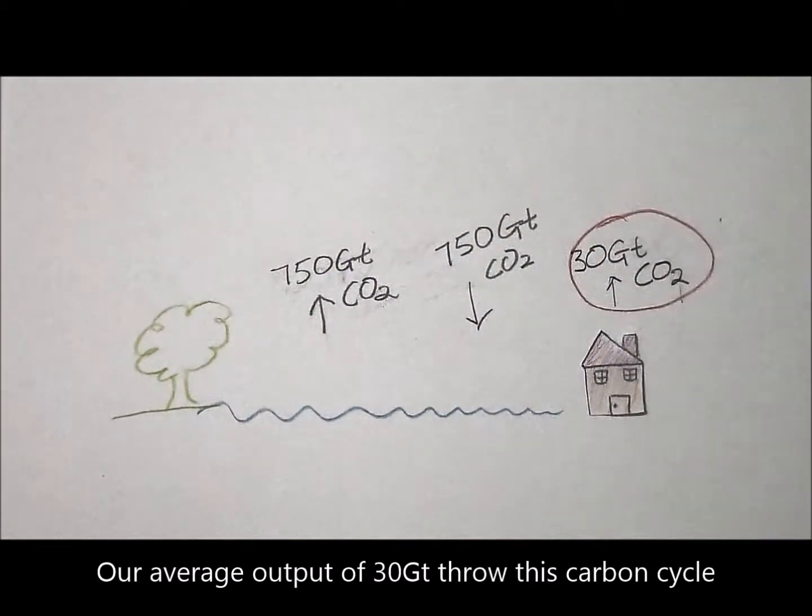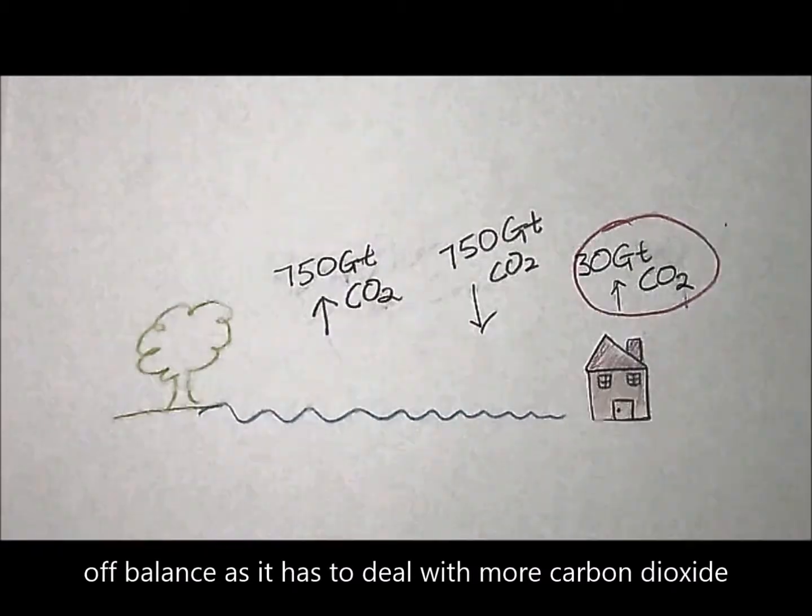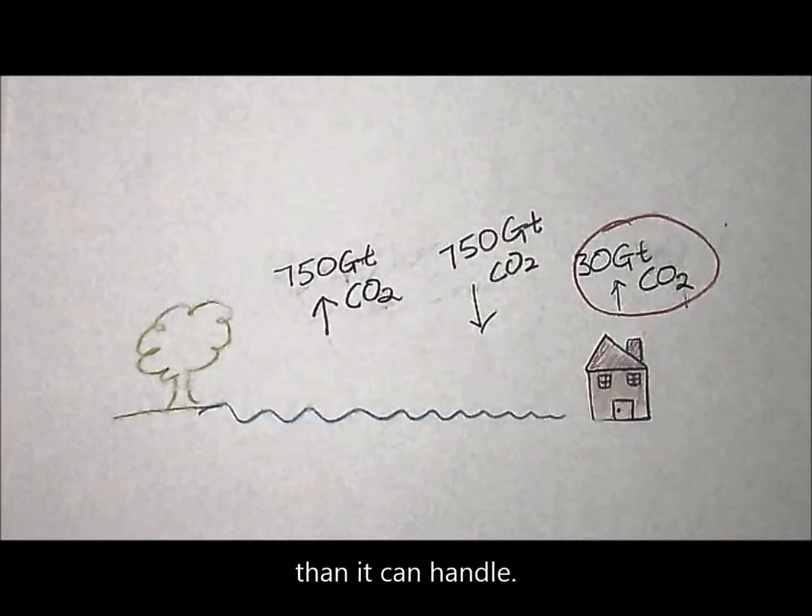Our average output of 30 gigatonnes throws this carbon cycle off balance as it has to deal with more carbon dioxide than it can handle.